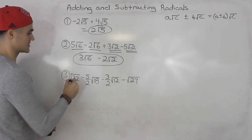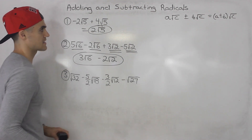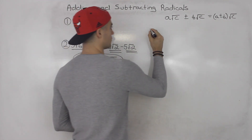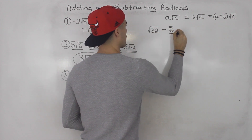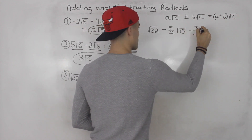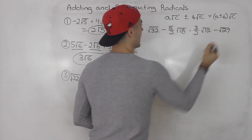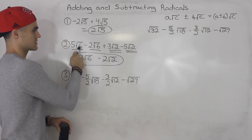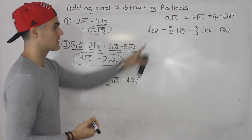Number 3: notice that all of the radicals here are different — we have root 32, root 18, root 12, root 27. However, notice that we can simplify these radicals first. That's another scenario you're going to run into: sometimes you have to simplify the radicals first and then see if there are any like terms. With questions 1 and 2, the radicals were fully simplified — root 5, root 6, root 2 can't be simplified further. But root 32 can be simplified further.